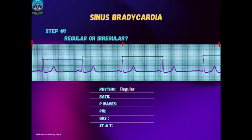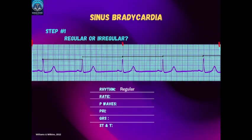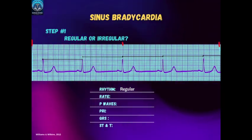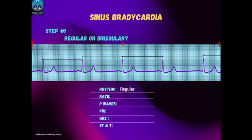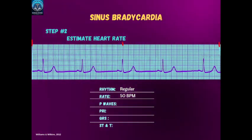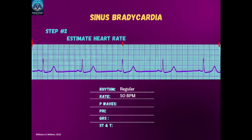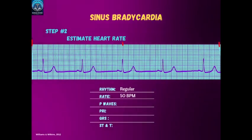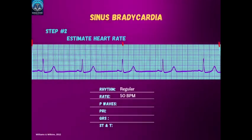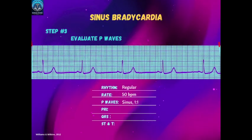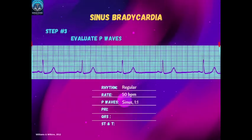Now let's do a practice strip for sinus bradycardia. Step 1: the rhythm is regular — counting small boxes between R-to-R intervals gives an average of 37 small boxes, and using the hash mark method confirms the rhythm marches out regularly. Step 2: I notice three red hash marks indicating a six-second strip. Counting R waves, I have five within the six-second strip. Five times 10 equals 50 — the estimated heart rate is 50 beats per minute. Step 3: evaluating the P waves, there is one P wave for every QRS, and each P wave is upright, round, and uniform — confirming sinus P waves.